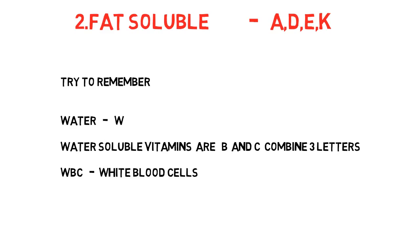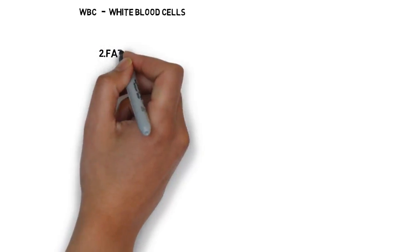White blood cells. So here white stands for W. What is the meaning of W? W stands for water. And blood stands for B, vitamin B. C stands for vitamin C. So both B and C are water soluble vitamins.